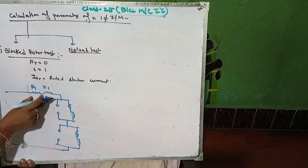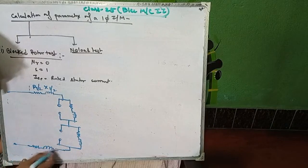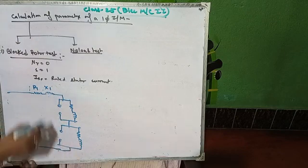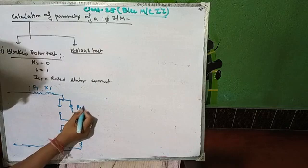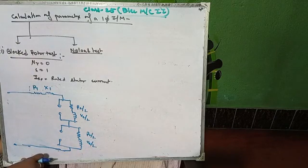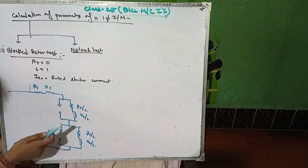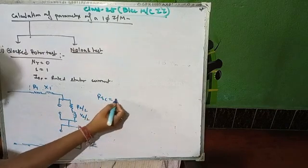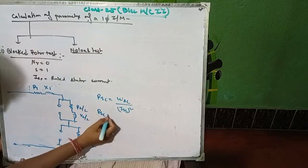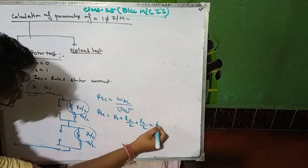The equivalent circuit for the blocked rotor test contains R1, R2/2 and R2/2 (which sum to R1 + R2), and reactances X1, X2/2, X2/2. From this, R_sc equals W_sc divided by I_sc squared, and R_sc equals R1 plus R2. So R2 can be calculated as R_sc minus R1.